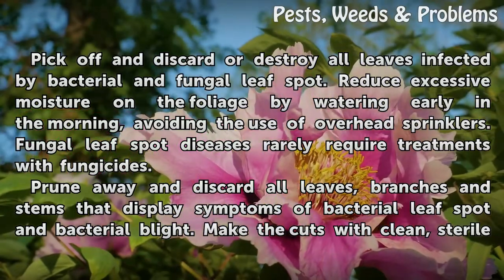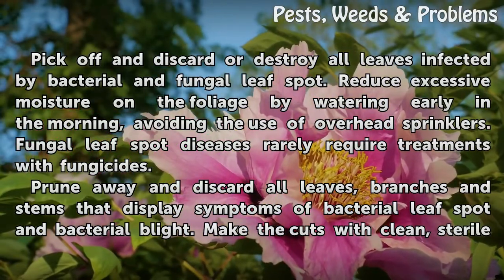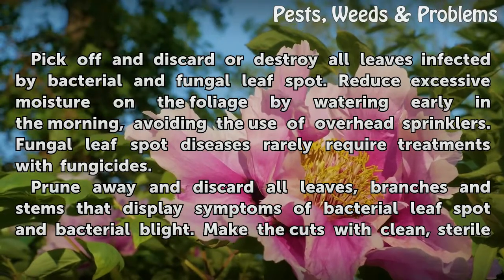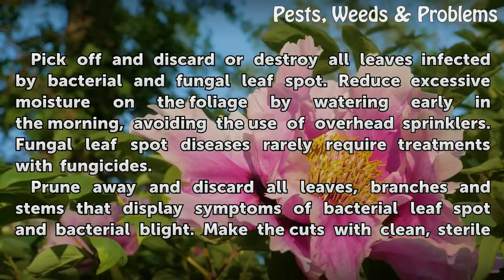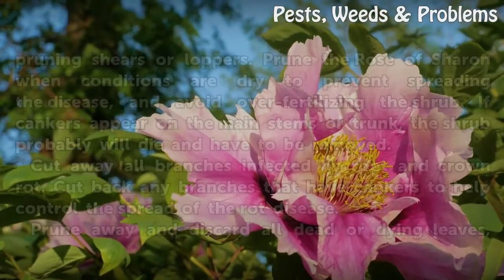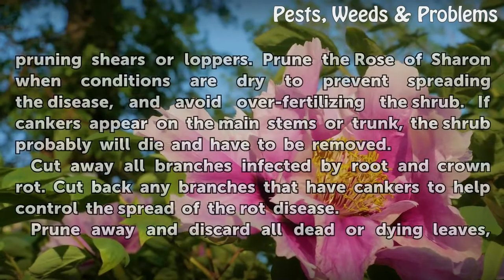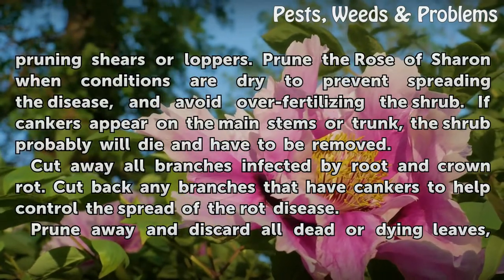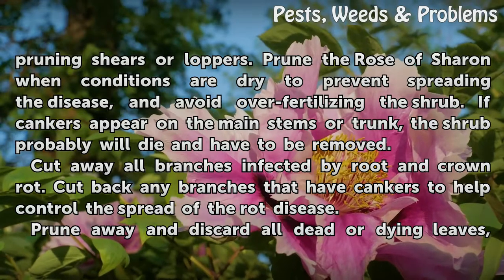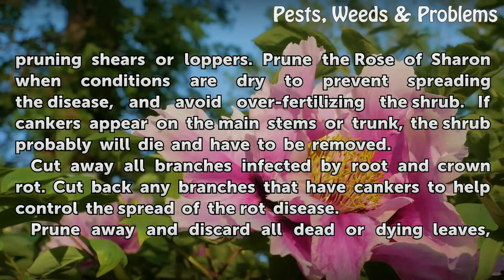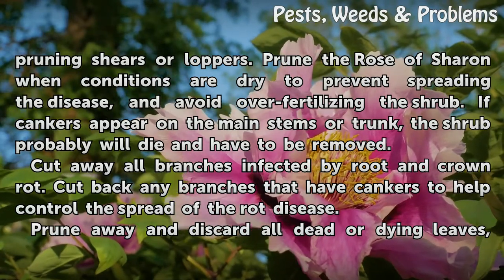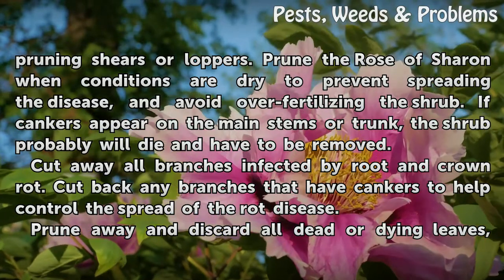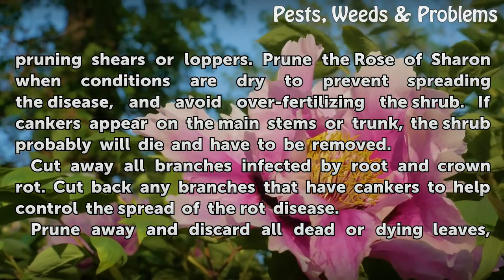Prune away and discard all leaves, branches and stems that display symptoms of bacterial leaf spot and bacterial blight. Make the cuts with clean, sterile pruning shears or loppers. Prune the Rose of Sharon when conditions are dry to prevent spreading the disease, and avoid over-fertilizing the shrub. If cankers appear on the main stems or trunk, the shrub probably will die and have to be removed.